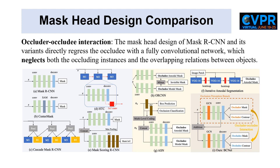The mask head design of Mask RCNN and its variants directly regresses the occluded instance with a fully convolutional network on the input single-layered image, or only regresses both modal and amodal masks from the occluded instance, which neglects both the occluding instances and the overlapping relations between objects. To mitigate this limitation, BCNET extends existing two-stage instance segmentation methods by adding an occlusion perception branch parallel to the traditional target prediction pipeline, so that interactions between objects within the ROI region can be well considered during the mask regression stage.